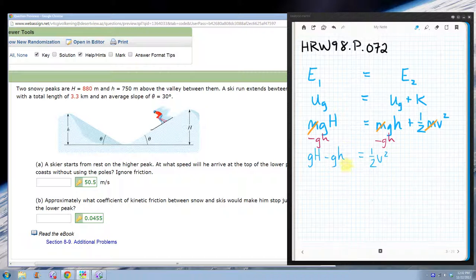Let's see, multiply both sides by two. I'm going to go ahead and pull this g out to the front, so then I just have capital H minus lowercase h over here equals v squared.